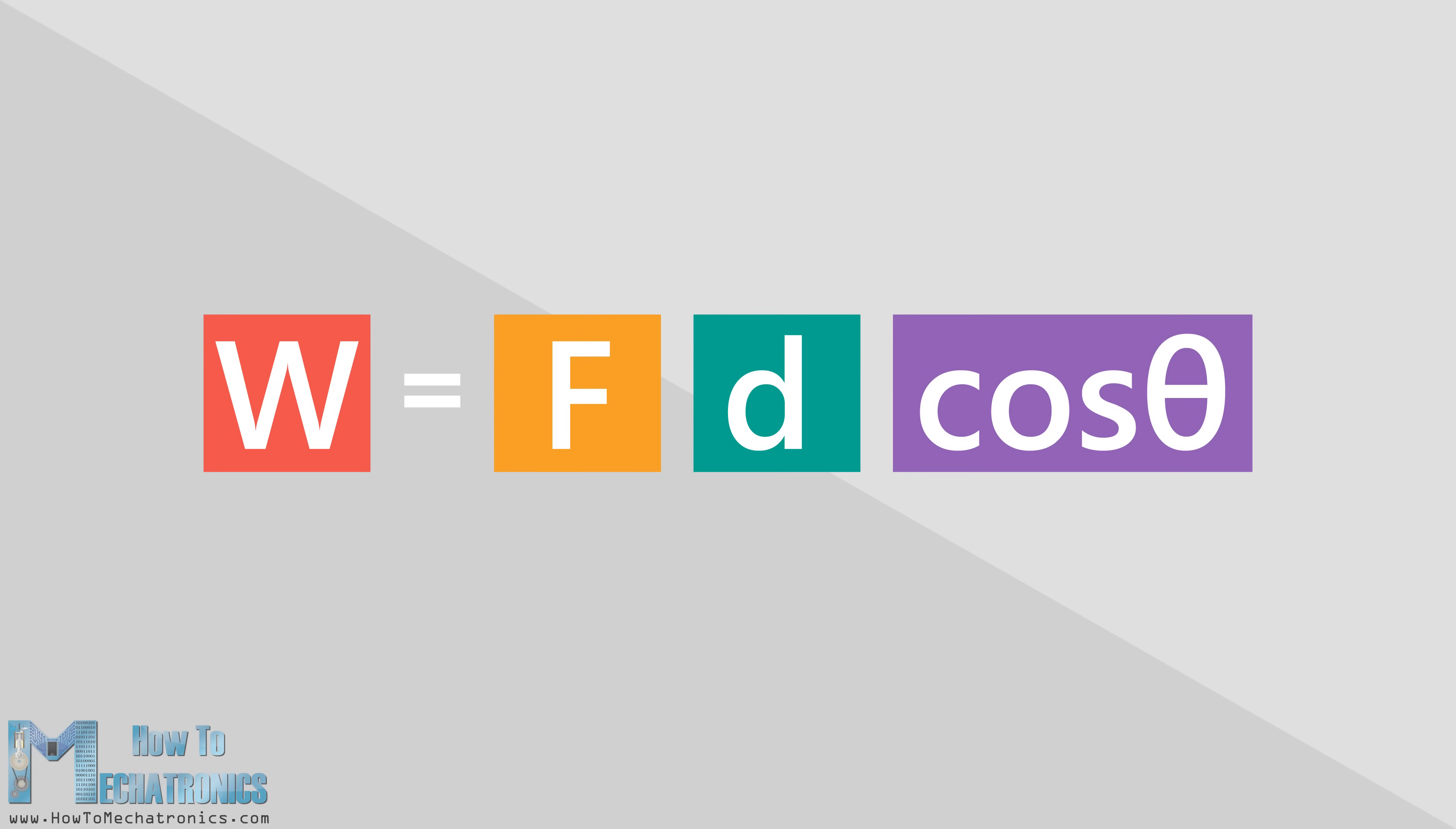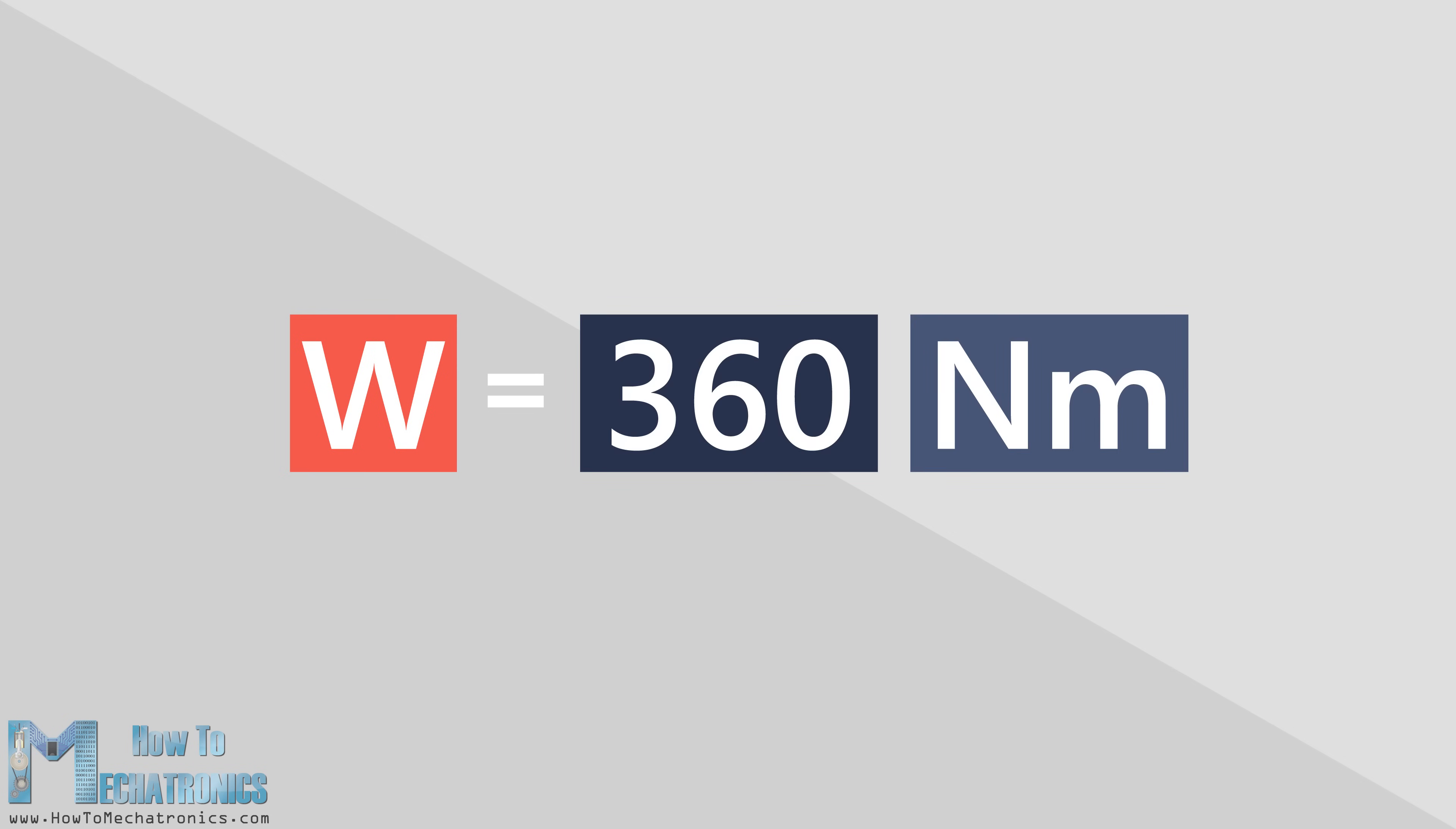Let's put the numbers here. If you move the box 6 meters with a constant force of 60 N, you actually did 360 Nm of work on the box, which is equivalent to 360 Joules. Instead of Nm, the work is expressed in units called Joules.